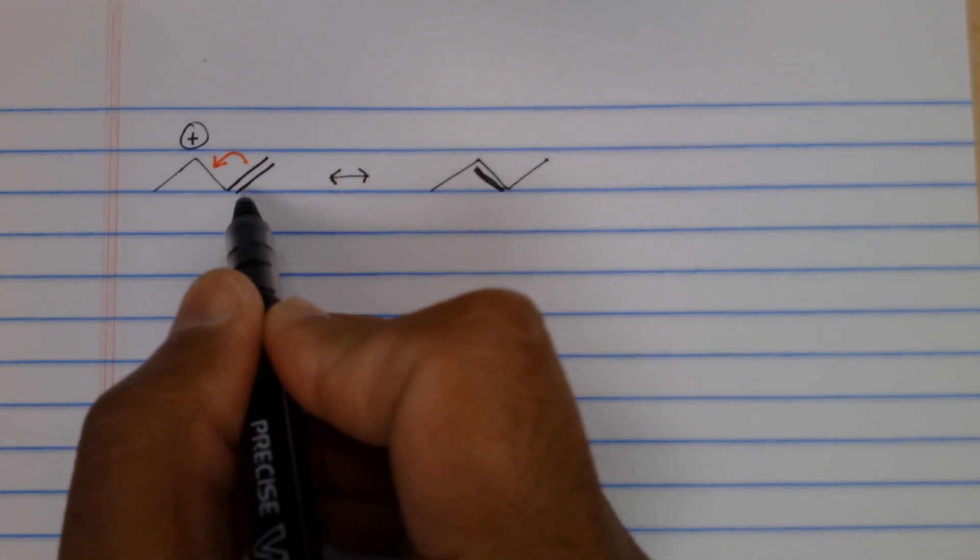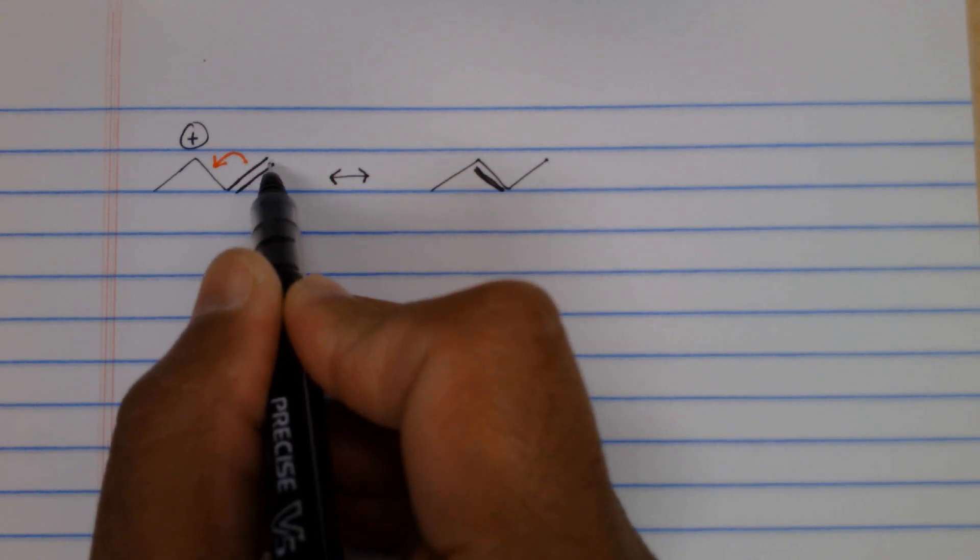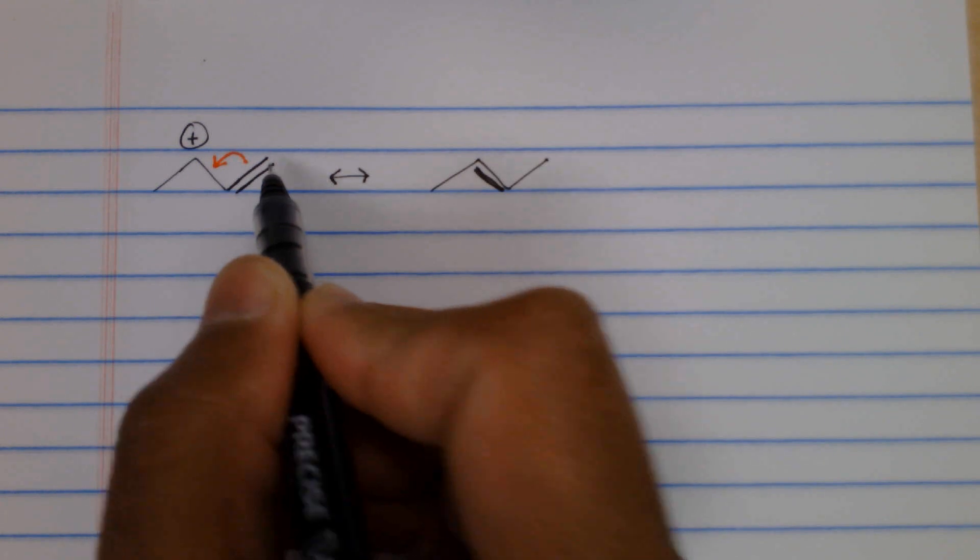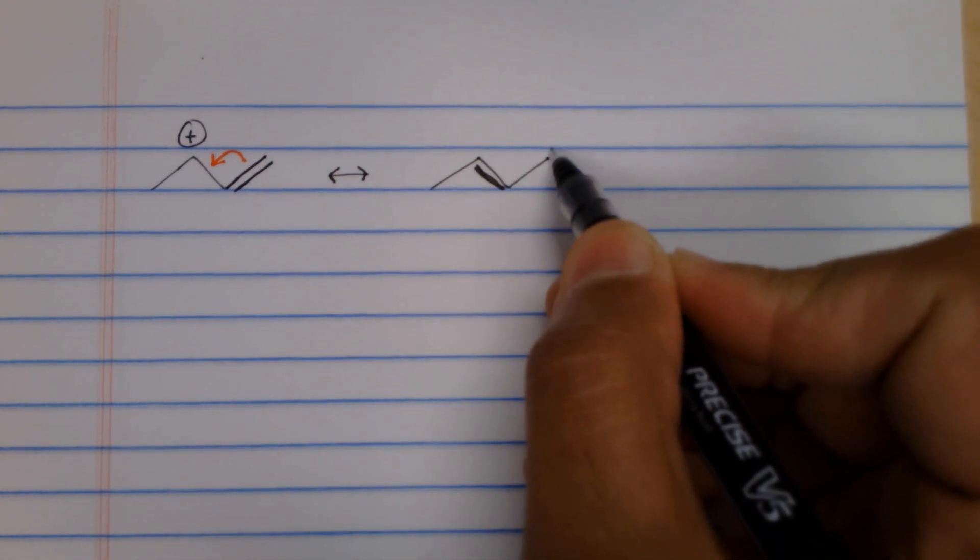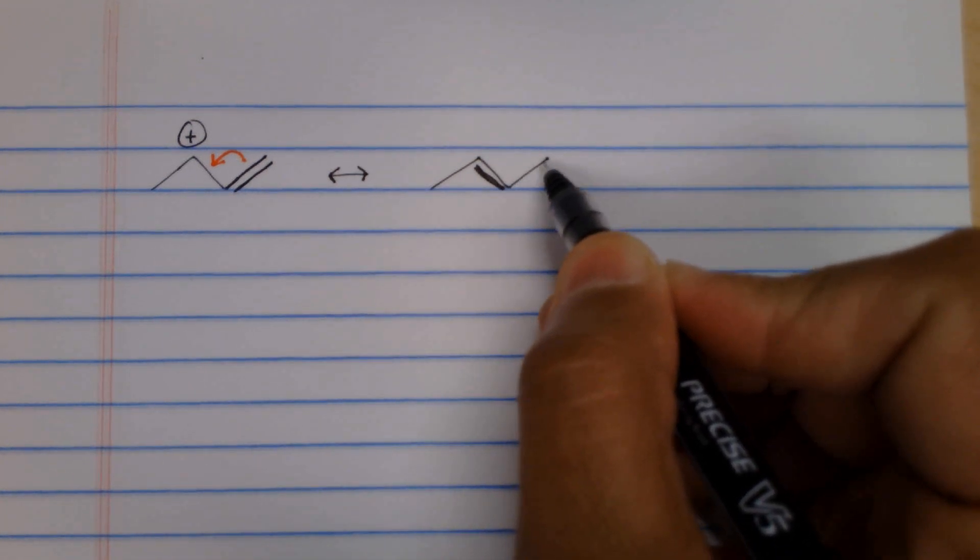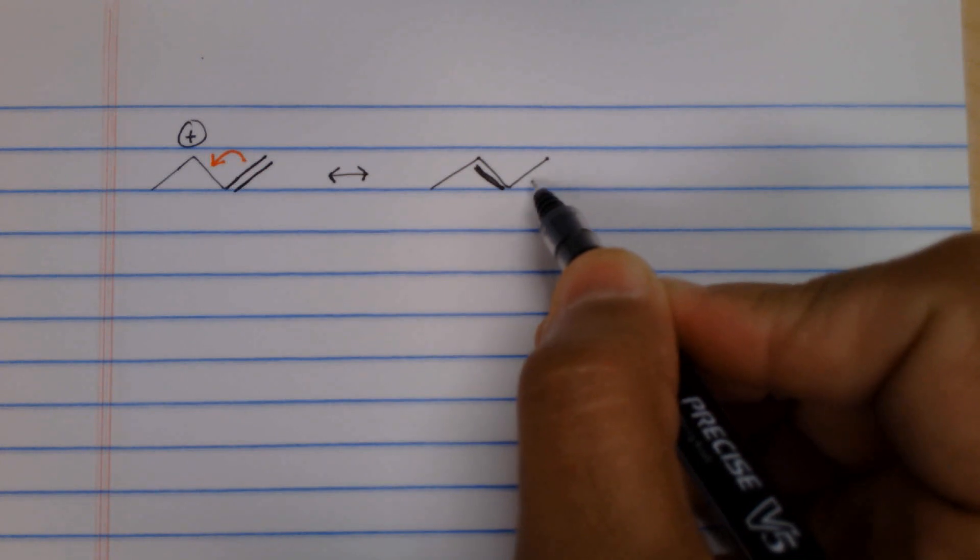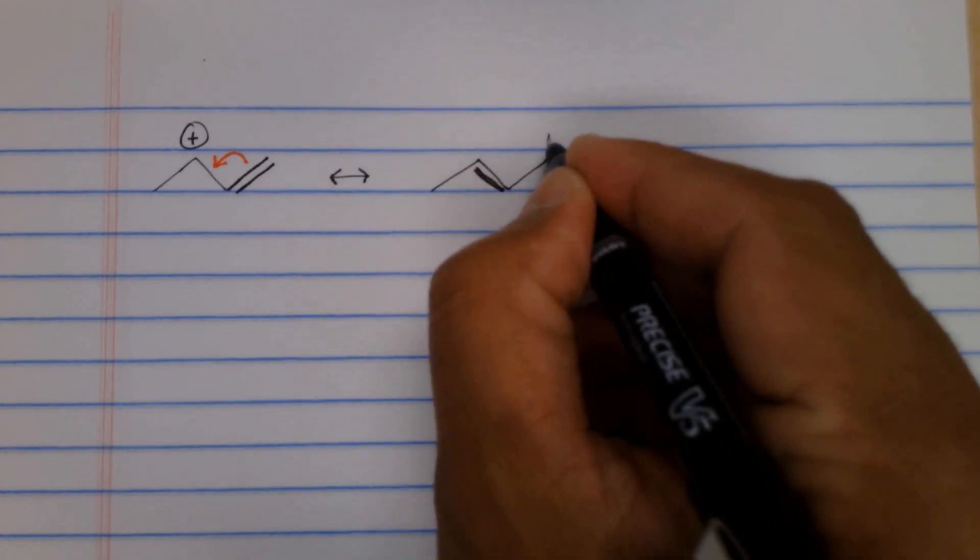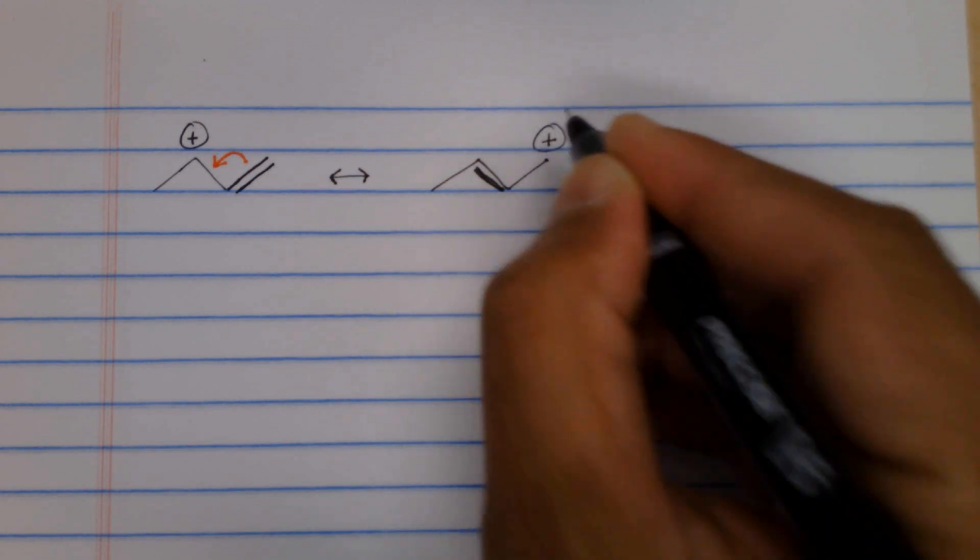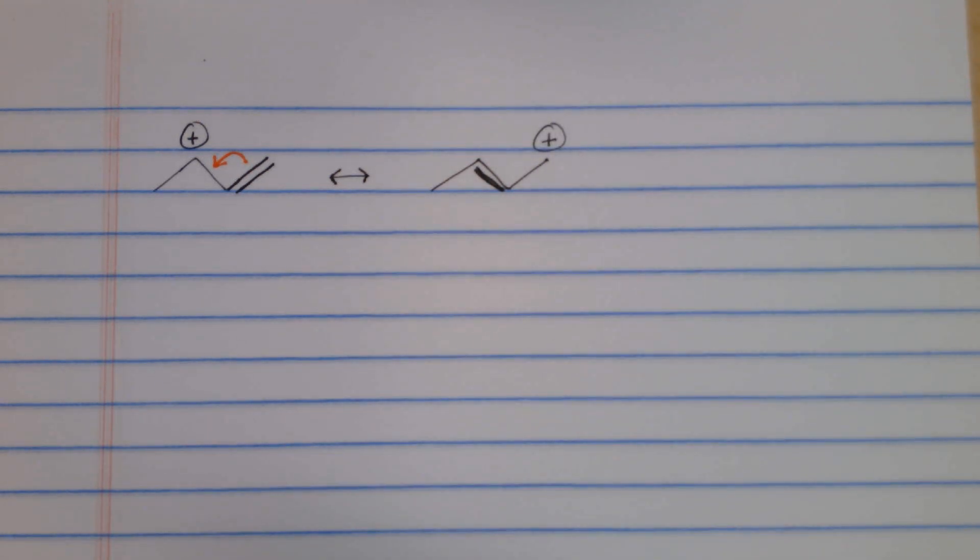We see the double bond. We know that it has two hydrogen atoms that are not drawn. Well now it has two hydrogen atoms and only one sigma bond here. So it's missing the pi bond. So this carbon, excuse me, becomes positive.